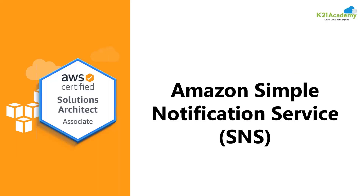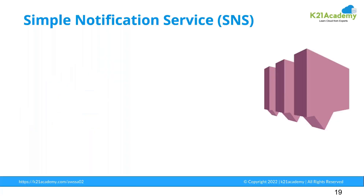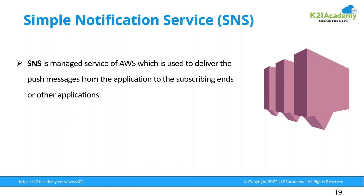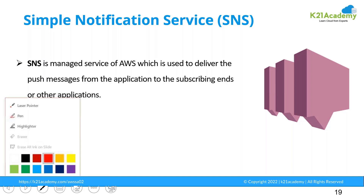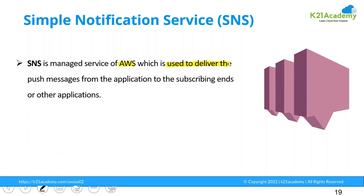Another application service that we are going to talk about today is SNS. This is very important to understand. Individually, SNS — that is Simple Notification Service — has got no importance, but when it is integrated with the other services of Amazon it is a highly important service. What it basically does is SNS is a managed service of AWS, used to deliver messages in a push manner, and you have some endpoints which are available to you.